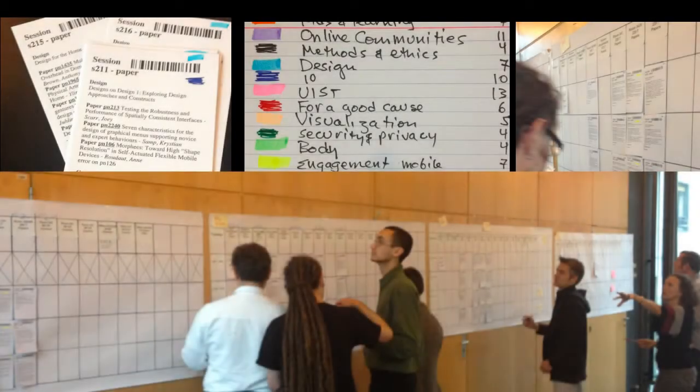Planning a good program for a large conference is a difficult and time-consuming task. At CHI, this is done in two stages. First, the conference chairs and 15-25 associate chairs meet to create small groups of papers, form categories or personas, put together 80-minute long sessions, and build a rough preliminary schedule.